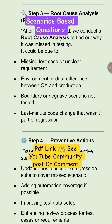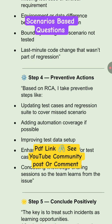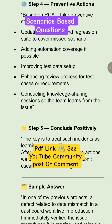In step four, we have to take preventive actions, like updating the test cases and regression suite to cover the missed scenario. We have to add automation coverage if possible, and we have to improve the test data setup.